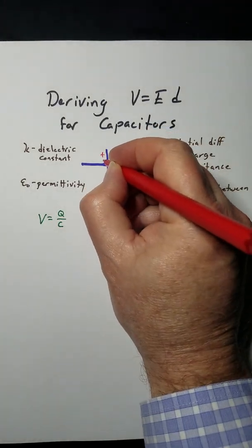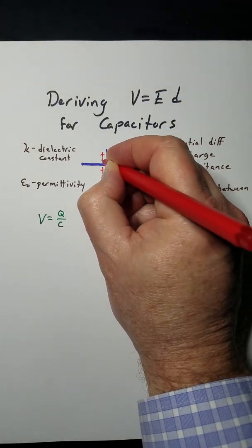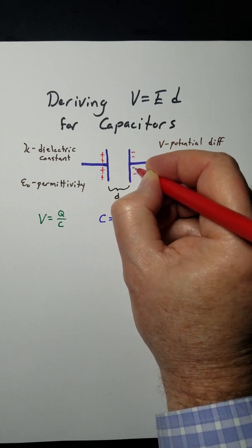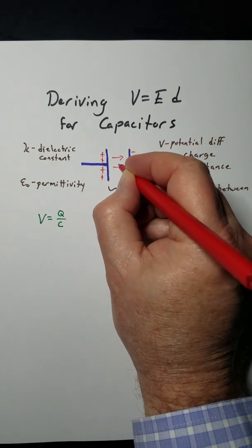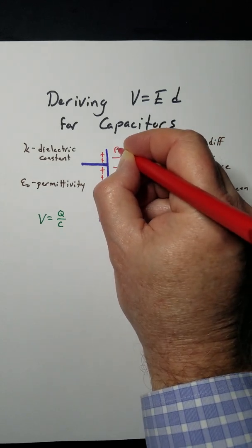The capacitor is two parallel plates that one builds up a charge, the other builds up an opposite charge, and there's an electric field between them that's pretty constant.